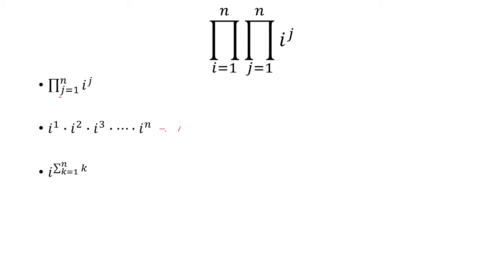This is just i to the 1 plus 2 plus 3 all the way up to n. That's why I simplified this as a sum from k equals 1 to n of k, which we know is n times n plus 1 over 2.